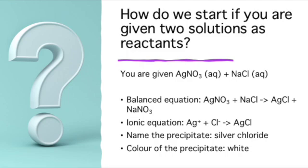Number two: write out the ionic equation. Number three: identify the precipitate. And number four: identify the color of the precipitate — before we can move on to the calculation steps.